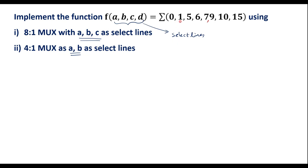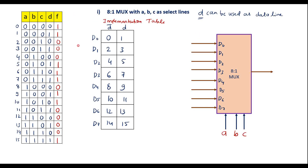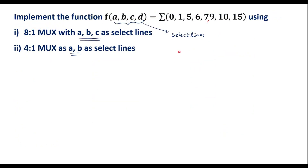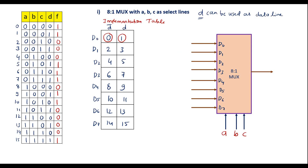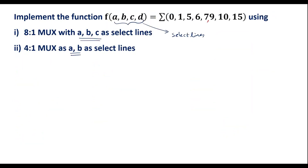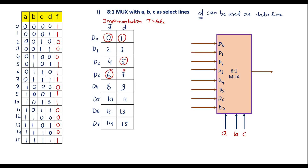The given minterms are 0, 1, 5, 6, 7, 9, 10, and 15. I put a circle for 0 and 1, then circles for 5 and 6, circles for 7 and 9, and circles for 10 and 15 in the implementation table.